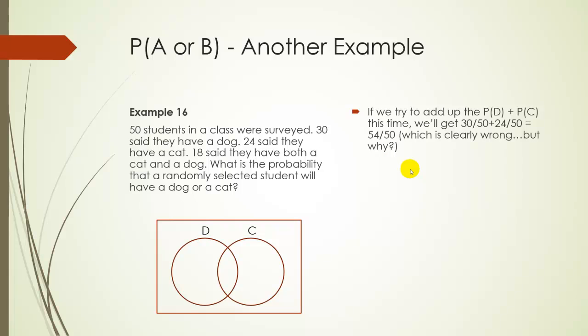Well, let's show this on a Venn diagram. So here we have the dog group, here we have the cat group. So the 30 people that have a dog, we don't know which region they're in. They could be all over here or maybe some over here and some over here. We're not really sure. But we do know that 18 said they had both a cat and a dog. So there would be 18 people in this middle group.